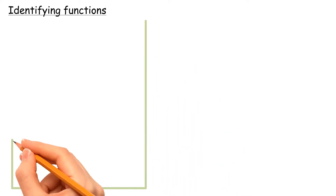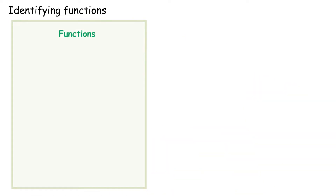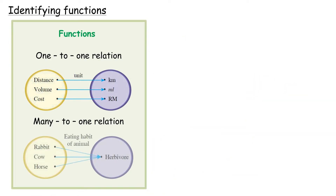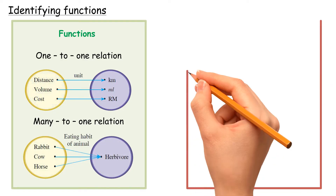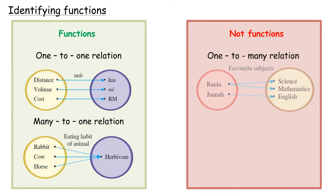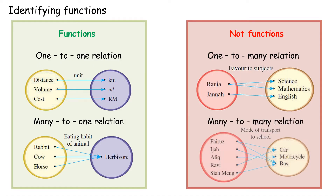Identifying functions: Relations that are functions include the one-to-one relation and the many-to-one relation. Relations that are not functions include the one-to-many relation and the many-to-many relation.